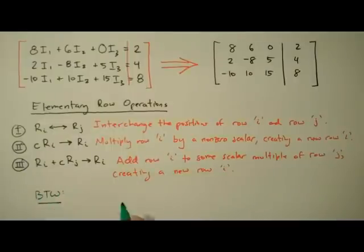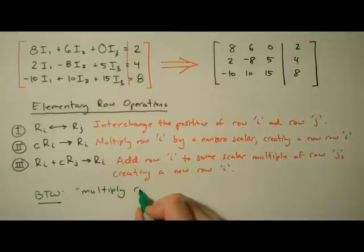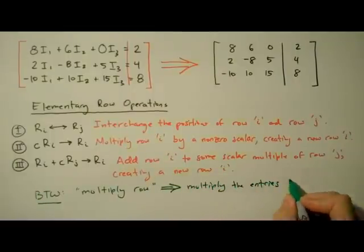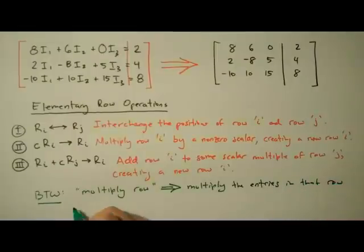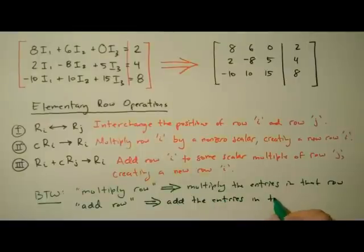By the way, when we say multiply row i by a non-zero scalar, what we really mean to say is multiply each of the entries in row i by that non-zero scalar. Likewise, when we say add row i to row j, what we really mean to say is add each of the entries in row i to each of the corresponding entries in row j.